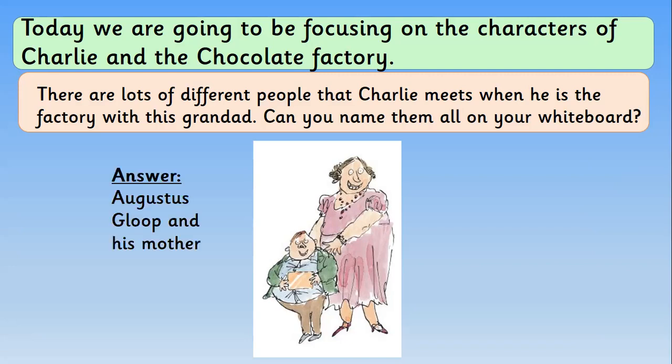Well done — it's Augustus Gloop! He's the one who ends up in the chocolate waterfall and gets sucked up the pipe. He was very greedy, which is why he looks a little bit chubby, and he's so happy to be in there with all that chocolate that he ends up falling into the river. He goes to the chocolate factory with his mum, and Quentin Blake has drawn them both brilliantly in his style. Lots of jagged edges, starting with their pointy noses — and no neck on either of them. That's really important for Quentin Blake: he doesn't really draw a neck.